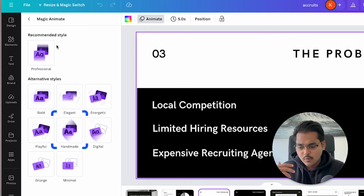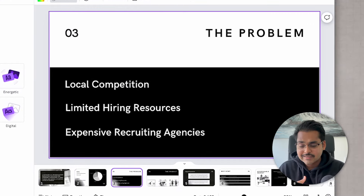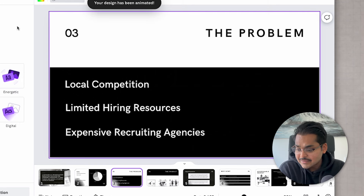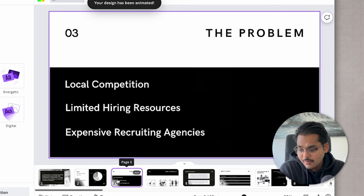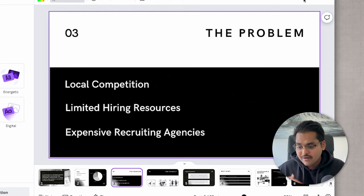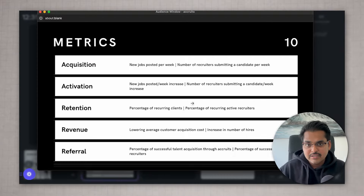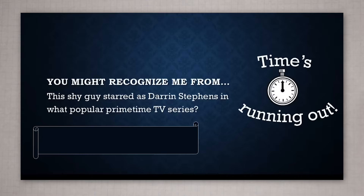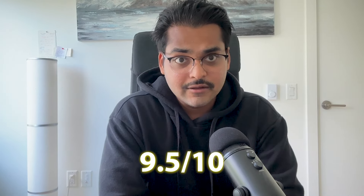All I have to do is pick a style of animation — professional, bold, elegant, energetic, playful, handmade. I'll pick professional since it's a pitch presentation, and it animates all my slides. There's a slow transition, different kinds of animation — fading, swiping up, elements coming together. I quite like those subtle animations. It does remind me of the early PowerPoint era where everything got clunky, but this is much more professional. I'd rate this 9.5 out of 10 — it definitely lives up to the hype.